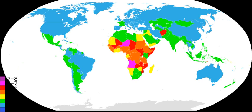Population planning that is intended to reduce a population or sub-population's growth rates may promote or enforce one or more of the following practices, although there are other methods: higher taxation of parents who have too many children.